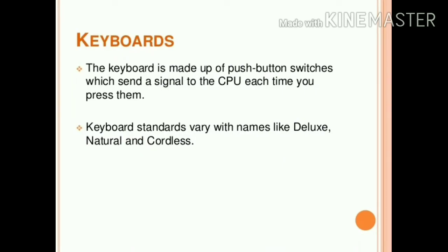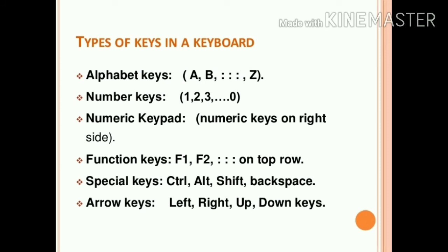Firstly we will discuss about the keyboard. The keyboard is made up of push button switches which send a signal to a CPU each time you press them. Jo keyboard hota hai, usmein bohot saari push buttons hoti hai — jaise hi hum un keys ko press karte hai, woh ek signal bhejta hai CPU ko jo text likhne mein help karta hai. There are so many keys on a keyboard: alphabet keys (A, B, C, D), number keys (1, 2, 3), numeric keypad on the right side, function keys F1, F2, F3 on the top row, and special keys such as Control, Alt, Shift, and Backspace.